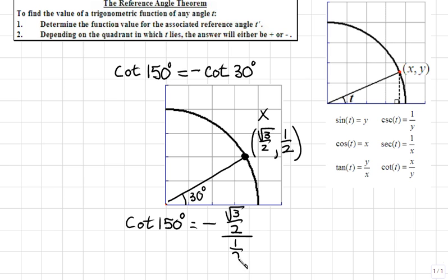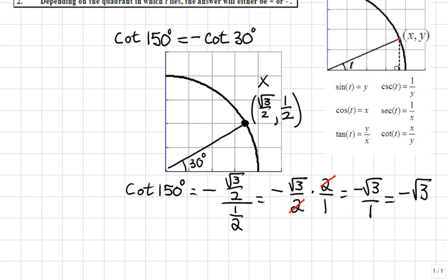We can simplify this since we're dividing two fractions. This will become negative √3 over 2. And inverting and multiplying our second fraction, 1 over 2 will become 2 over 1. The 2's cancel, and we're left with negative √3 over 1, which will simplify to negative square root of 3. So, we find that cotangent of 150 degrees using reference angles simplifies to the answer of negative √3.